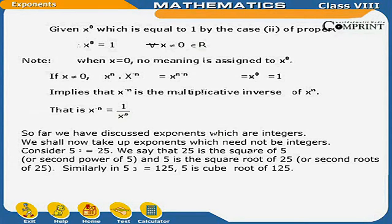X raised to the power 0 equals 1, by case 2 of the property. Therefore X raised to the power 0 is equal to 1 for every X not equal to 0 belonging to capital R. When X is equal to 0, no meaning is assigned to X raised to the power 0. If X is not equal to 0, then X raised to the power n into X raised to the power minus n equals X raised to the power n minus n, which equals X raised to the power 0, which equals 1. This implies that X raised to the power minus n is the multiplicative inverse of X raised to the power n; that is, X raised to the power minus n is equal to 1 upon X raised to the power n.